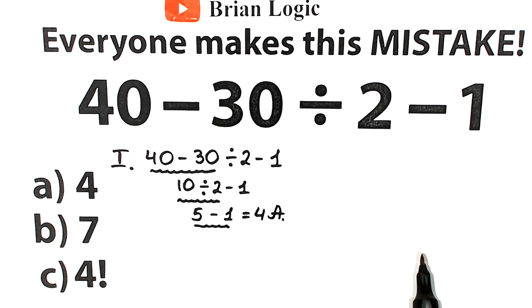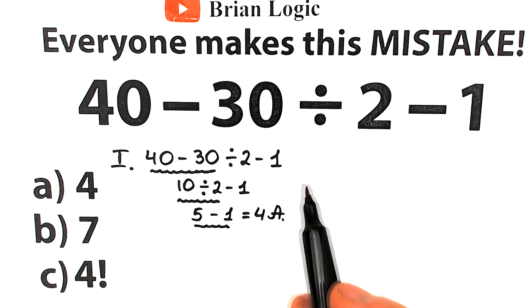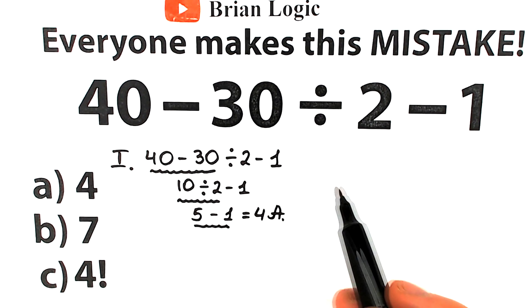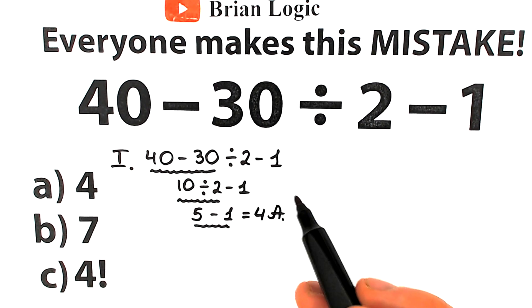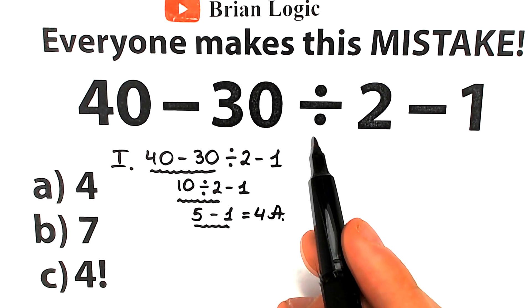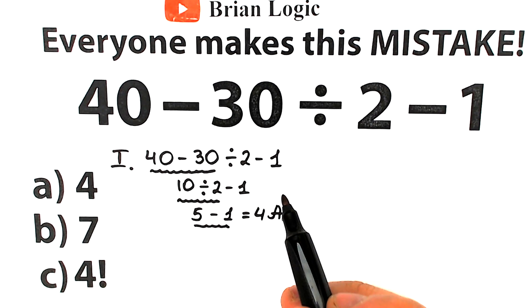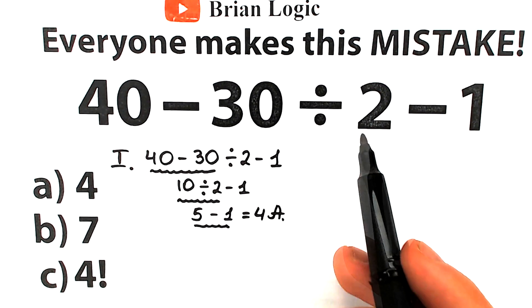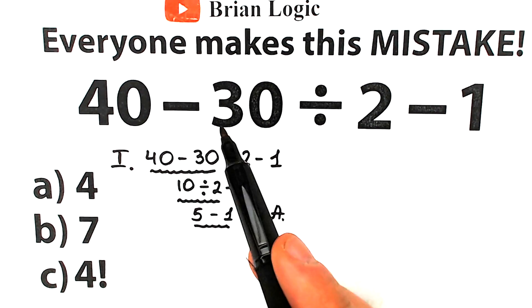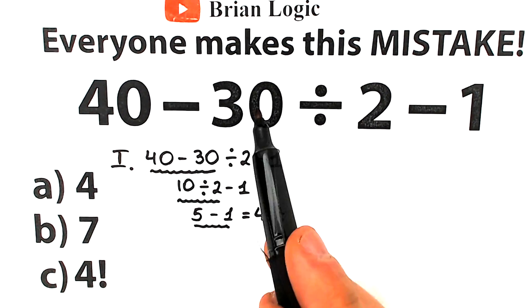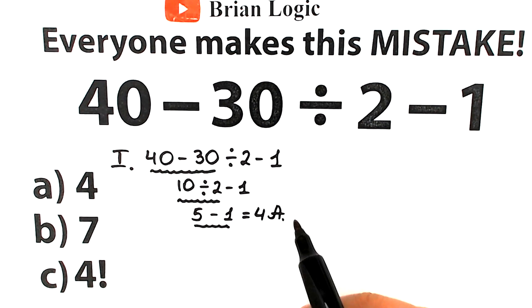But in math we need to know the correct order of operations — we can't solve this randomly. That is a really bad mistake in math. Whatever order of operations we select is going to create a different answer, so we need to understand what to do first: subtract or divide. Right here we have subtraction and division, so we need to know the correct order.